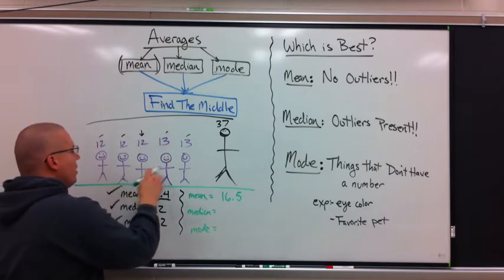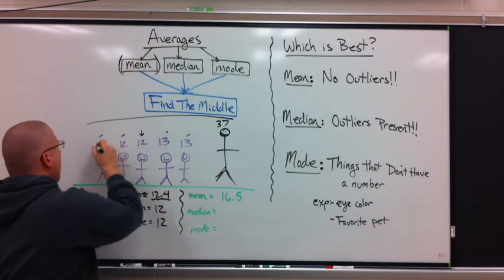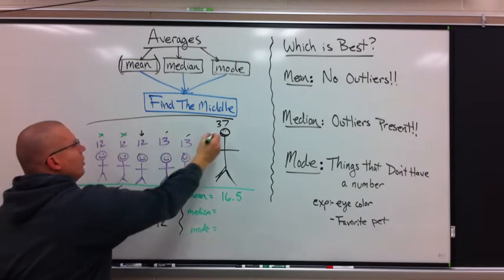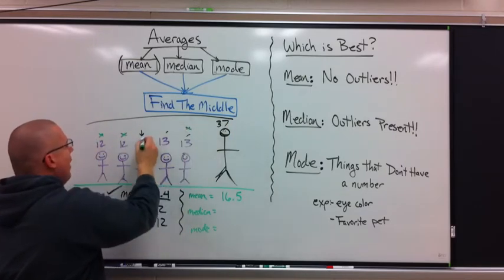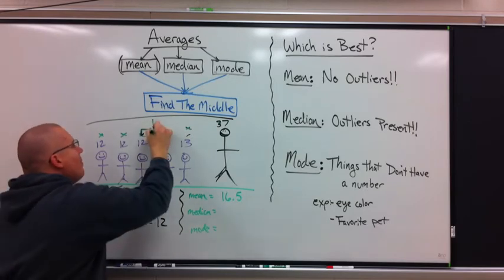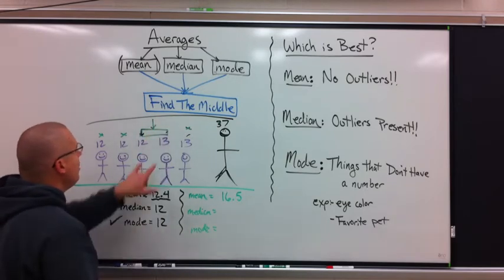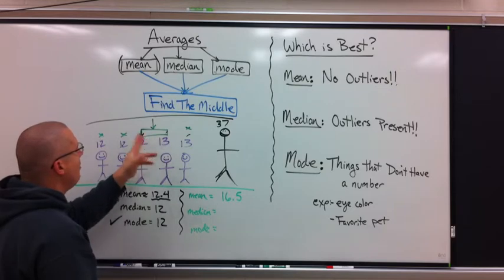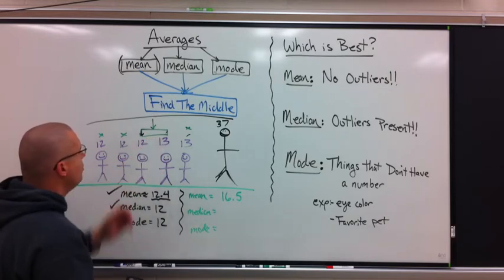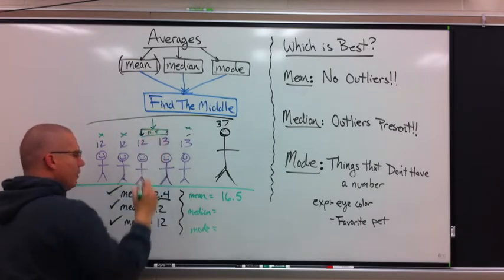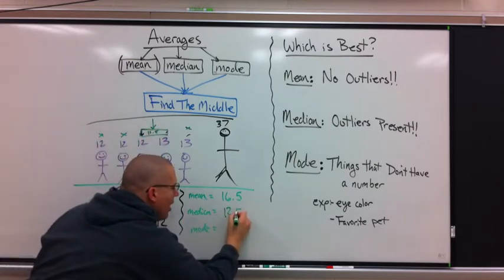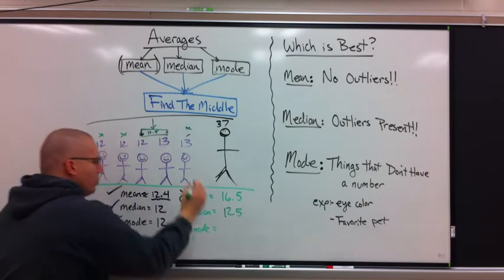Median. Cross off. 1, 2, 1, 2. Now I have two numbers. What do I do when I have two numbers? I have to find the middle of the two numbers. You can either reason it out or add them up and divide. 12 plus 13 is 25, divide by 2 is 12 and a half, 12.5. So the median is 12.5. The mode still is 12.